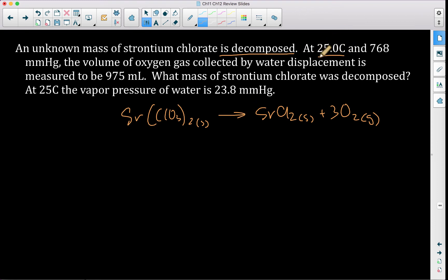At 25 degrees Celsius, so we have a temperature, and 768 millimeters of mercury, we have a pressure. The volume of oxygen gas collected by water displacement, why is that important? If water displacement is used, that means there's water gas mixed with my oxygen gas. It's measured to be 975 mL. What mass of strontium chlorate was decomposed? So we have 975 mils, and we have a temperature, and we have a pressure. So we have 25 degrees Celsius, and we have 768 millimeters of mercury. And we could say that 768 millimeters of mercury, that's like our P total. As in, that's my two gases mixed together. And we're going to have to subtract off the water.